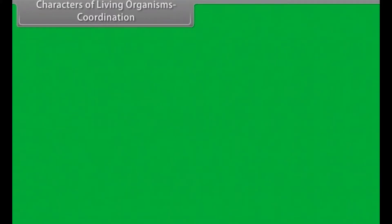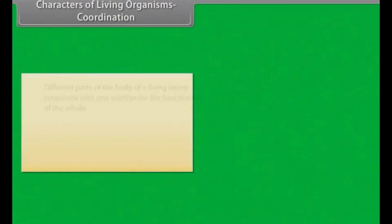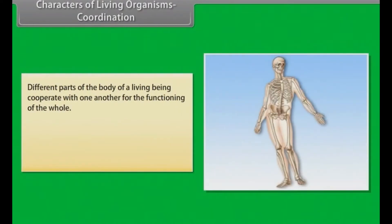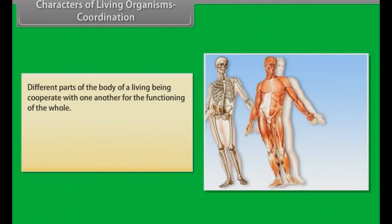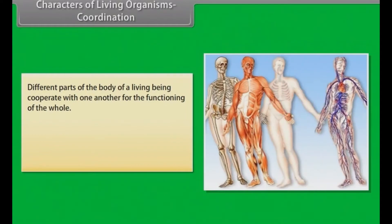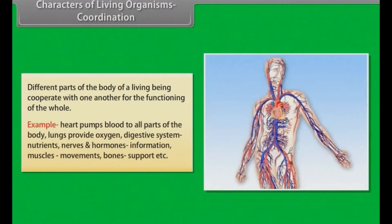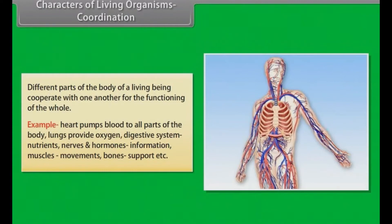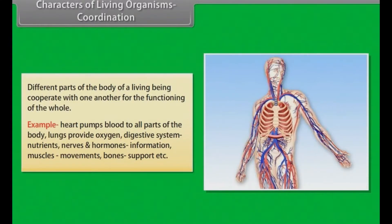Different parts of the body of a living being cooperate with one another for the functioning of the whole. For example, the heart pumps blood to all parts of the body, lungs provide oxygen, the digestive system provides nutrients, nerves and hormones carry information, muscles enable movement, and bones provide support.